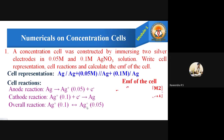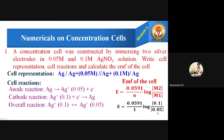To calculate the EMF of the cell, the formula is E = 0.0591 / n × log(M2 / M1). Here M1 is 0.05 molar and M2 is 0.1 molar. Since only the silver ion is involved, n equals 1. Substituting and simplifying, we get E = 0.017 volts. So the EMF of this silver concentration cell is 0.017 V.